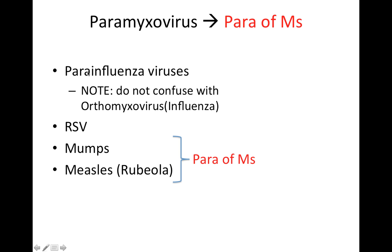When we talk about parainfluenza virus, I don't want you to confuse it with orthomyxovirus, which is an easy thing to do because the names are so similar. Orthomyxovirus is going to be influenza, and parainfluenza virus is going to be part of paramyxovirus. Sometimes you'll get questions where the answer choices include either influenza and parainfluenza, or orthomyxovirus and paramyxovirus. You've got to make sure you have a good handle on the difference between the two.